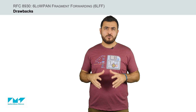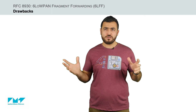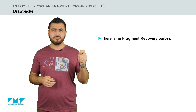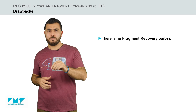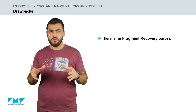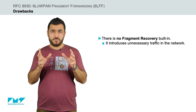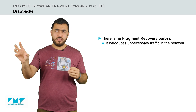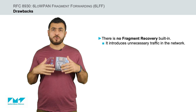Even though 6LFF based on the VRB method overcomes certain issues of per-hop fragmentation and reassembly, it comes with some limitations. First, there is no fragment recovery built-in. In case a single fragment is lost along the multi-hop path, there is no mechanism in 6LFF for the node that reassembles an IPv6 packet to request it. This issue introduces unnecessary traffic in the network, since the remaining fragments are forwarded even when the destination node can never reassemble the original IPv6 packet. Moreover, it requires the whole IPv6 packet to be resent from the source node.